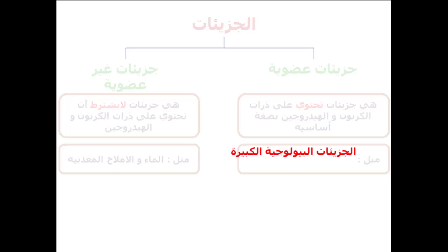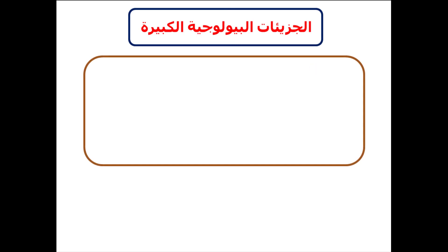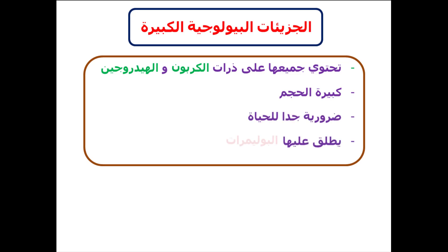الجزيئات البيولوجية الكبيرة كلها بتحتوي على ذرات الكربون والهيدروجين، وبتكون كبيرة في الحجم وضرورية جداً للحياة. يطلق على الجزيئات البيولوجية الكبيرة كلمة بوليمرات.